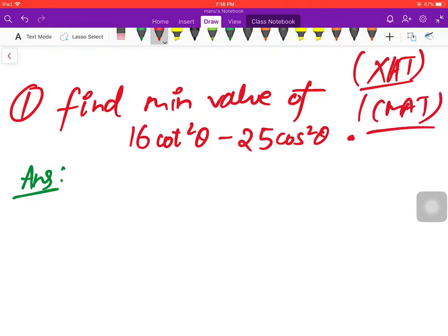See, what do we have to do here? Find the minimum value of 16 cot²θ - 25 cos²θ. Simple.